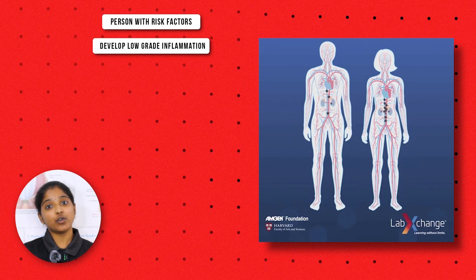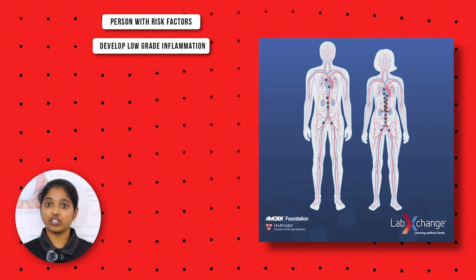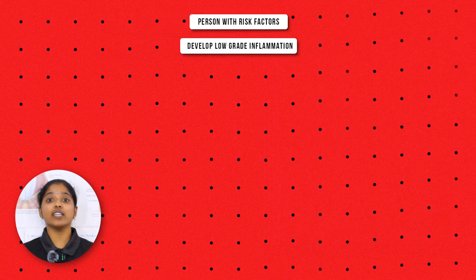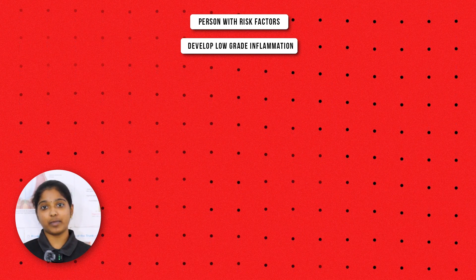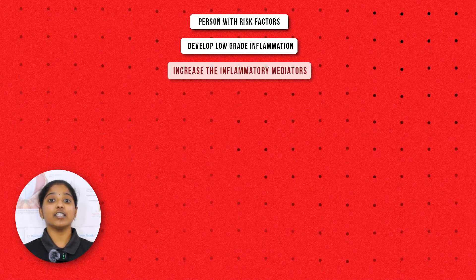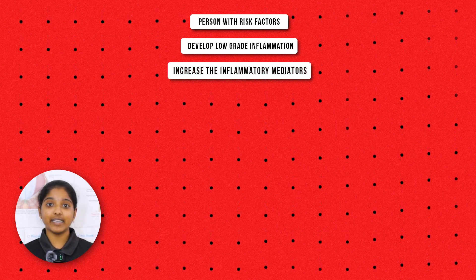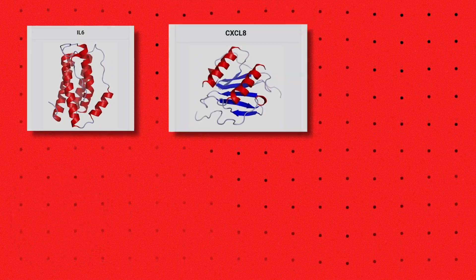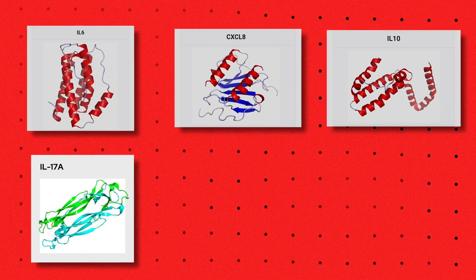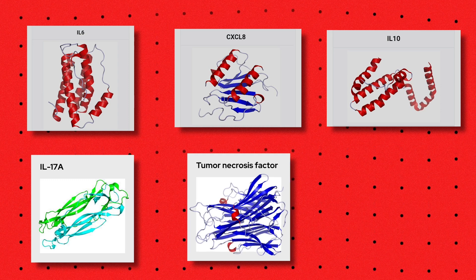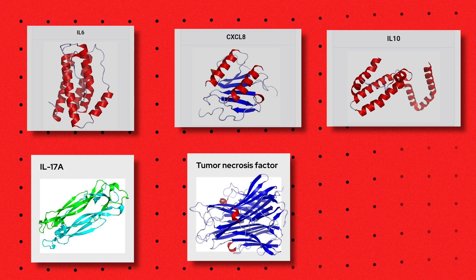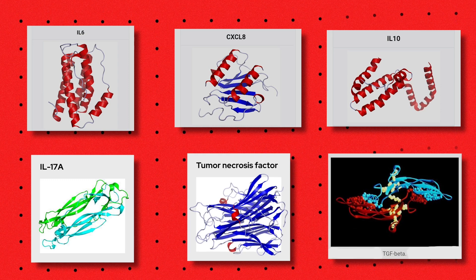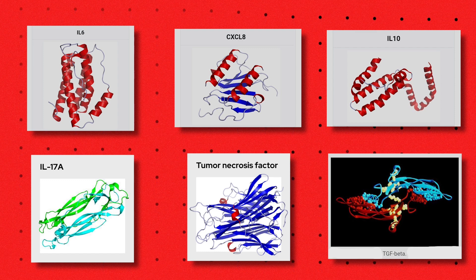If it persists for a longer duration, they will have chronic low-grade inflammation. This will increase the inflammatory mediators in their body, mainly interleukin-6, 8, 10, 17A, tissue necrotic factor, and mainly the transforming growth factor beta — that is TGF-beta.